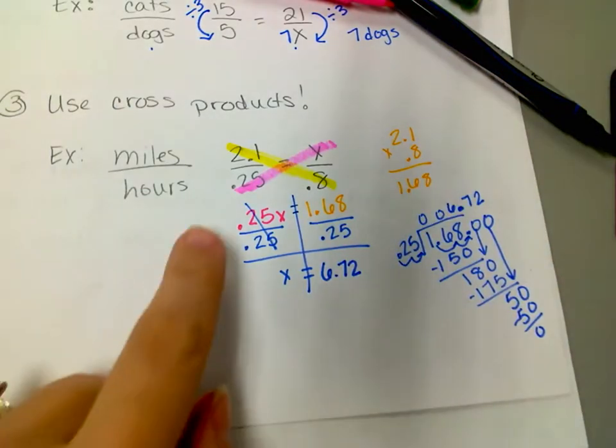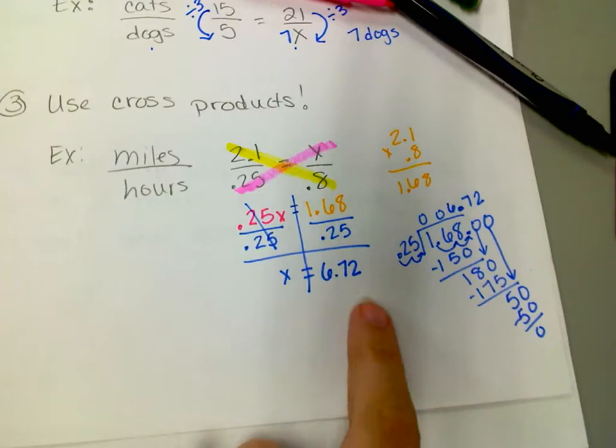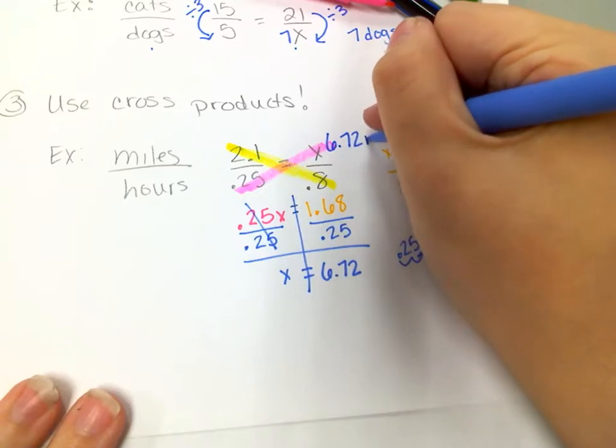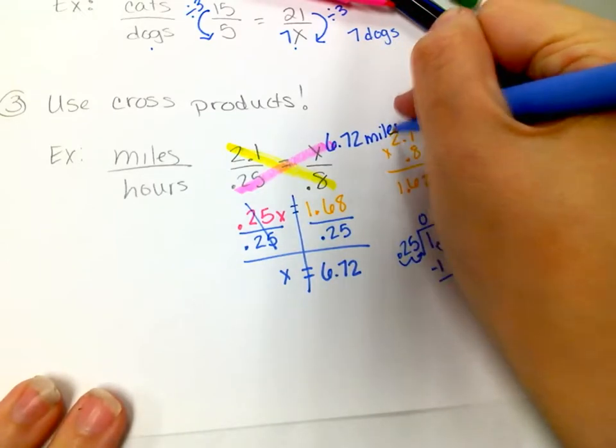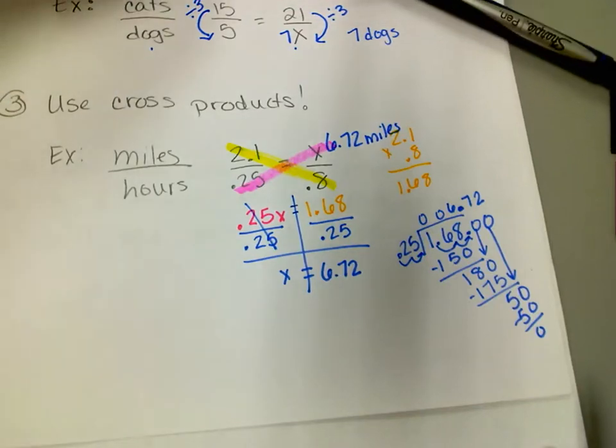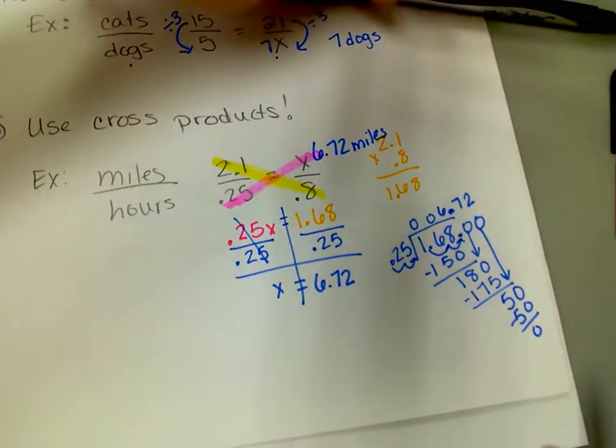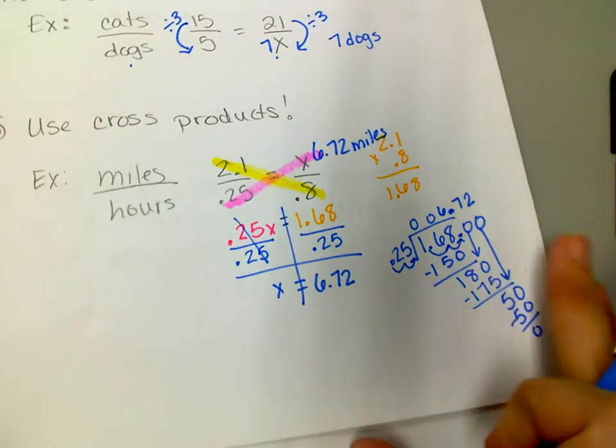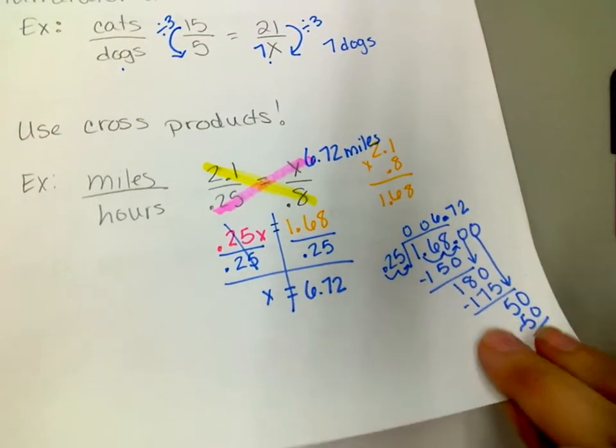So what that means is x equals 6.72. So if this is talking about miles in an hour, in 0.8 of an hour they will go 6.72 miles. There's your answer. Okay, so now we're going to solve some problems, and we'll just kind of look at the problem and decide which method we want to use. And if there's a method that you prefer, you can do that. Cross products will always get you the answer. Sometimes it's just not always the easiest one to do.